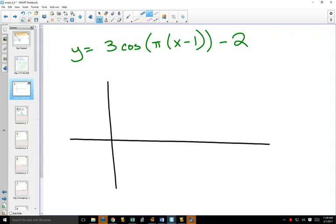We start with our D value. Can you see that it's a minus 2? So that means we are going to go down to minus 2 with a dotted line across. We can label our center line at minus 2. That's the D value.